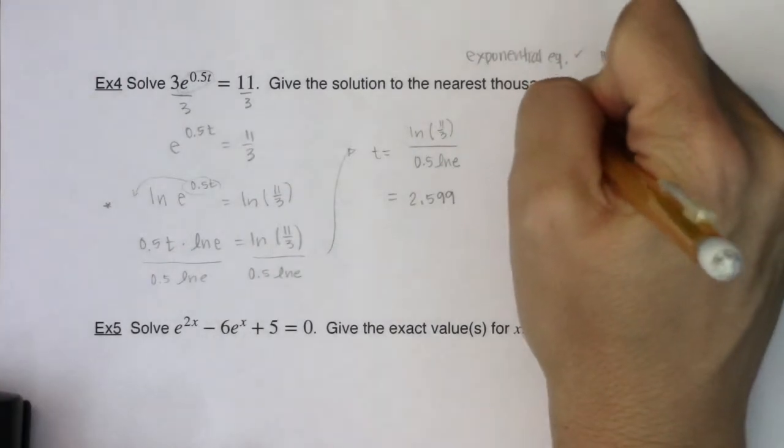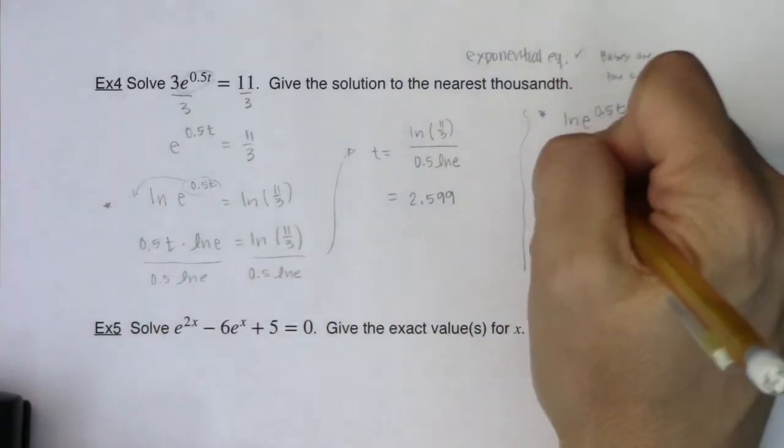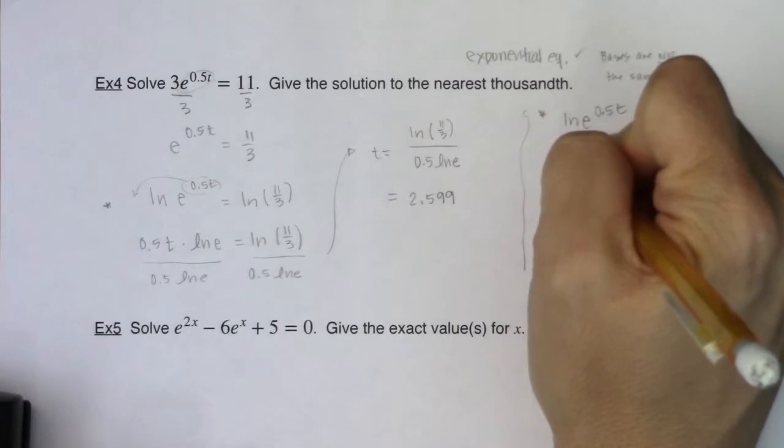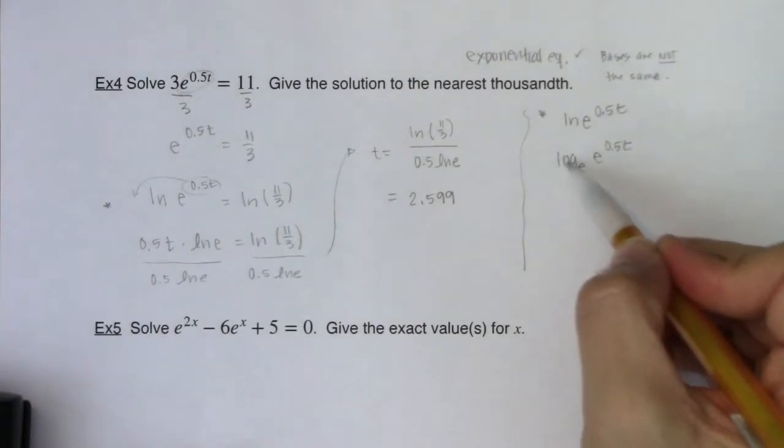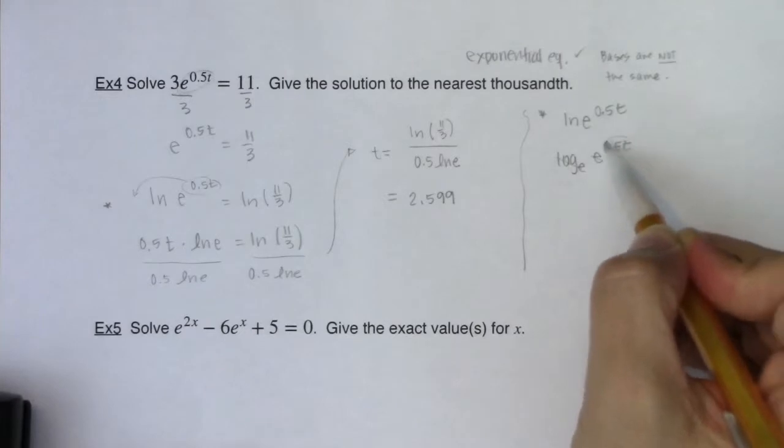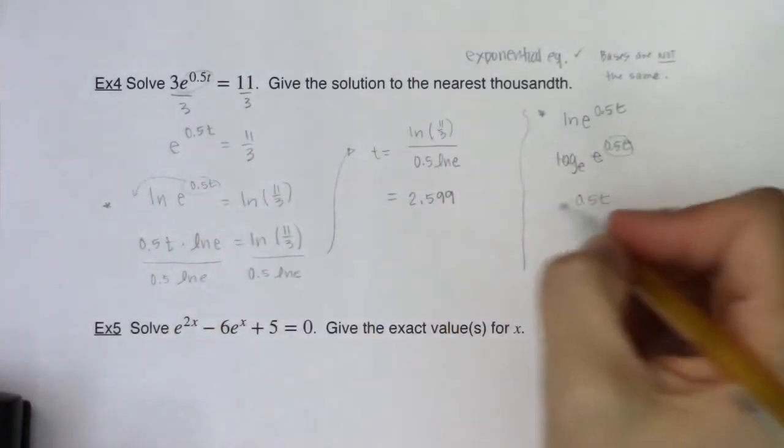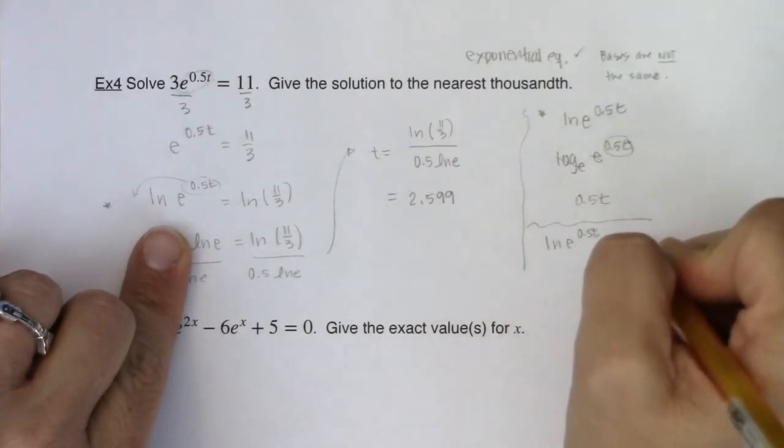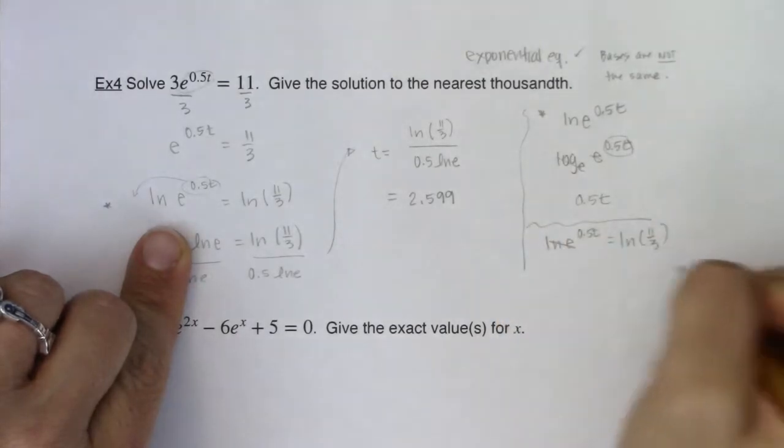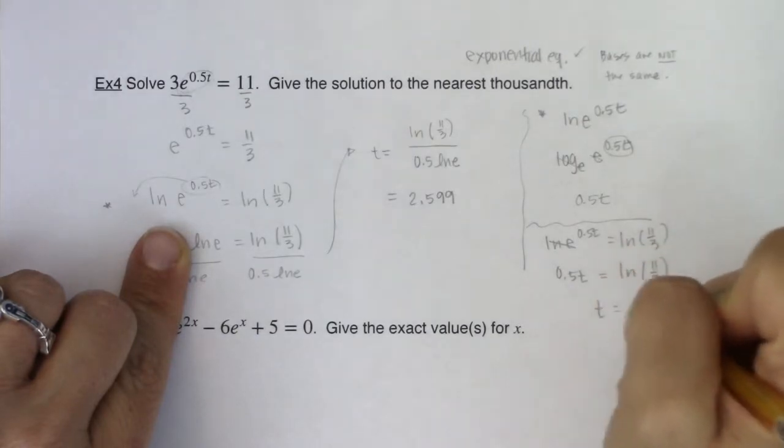All right, so let's take a look at the natural log of e^0.5t. I put a star here. I want to talk about this. So natural log is like saying log base e, and we have e^0.5t. We've talked about this before. When the base of your logarithm and the base of your power are the same, the only thing that survives is the exponent. And what that means is when I see this expression, when I had ln of e^0.5t equaling ln of 11 thirds, I could have just canceled this, and you could have told me 0.5t was ln of 11 thirds.